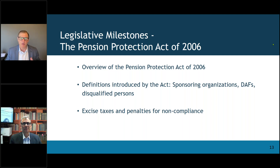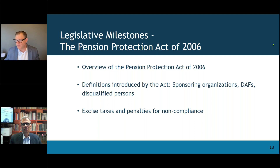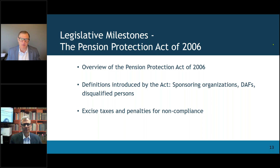What the Pension Protection Act also did is it finally put a definition to donor advised funds. It created this definition of what donor advised funds were and what they weren't, and also introduced Type 1, Type 2, and Type 3 supporting organizations and clarified the differences of those. So this was a very important aspect of where we got to with donor advised funds since 2006.